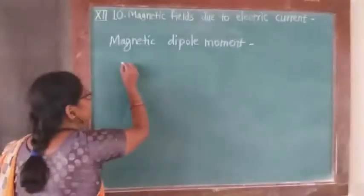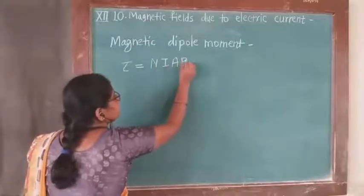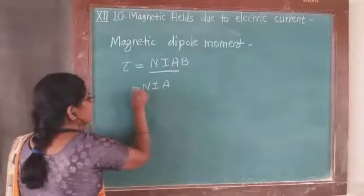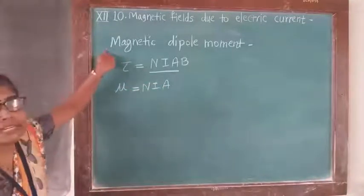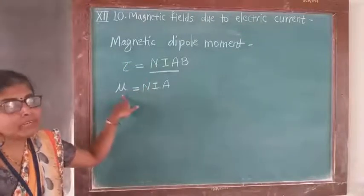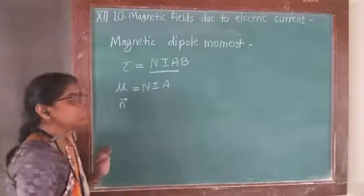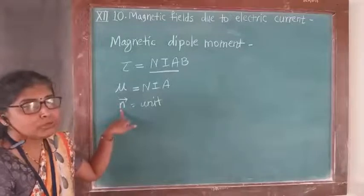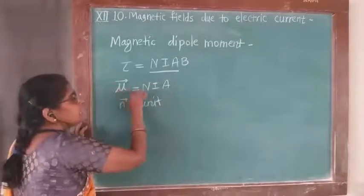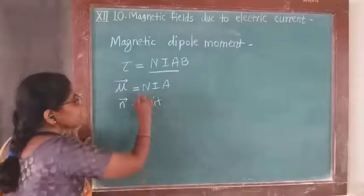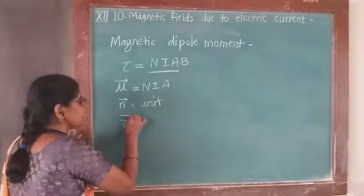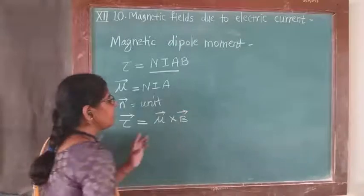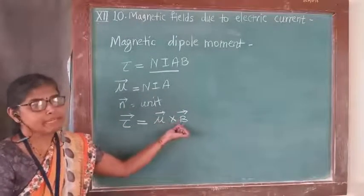The torque acting on the coil is equal to N·I·A·B. In this case the product N·I·A is called the magnetic dipole moment, denoted μ. This μ is a vector quantity and its direction is shown by the unit vector n̂, drawn from the south pole to the north pole — that is the direction of the magnetic dipole moment.